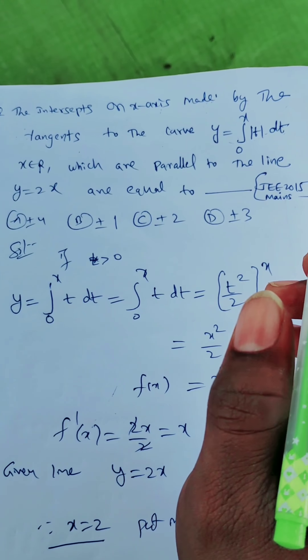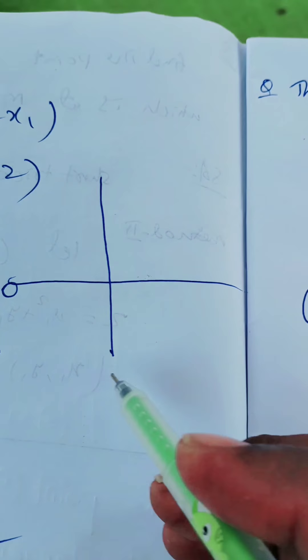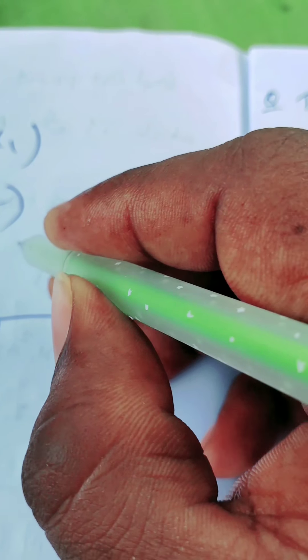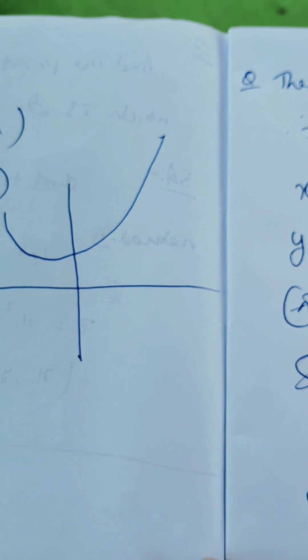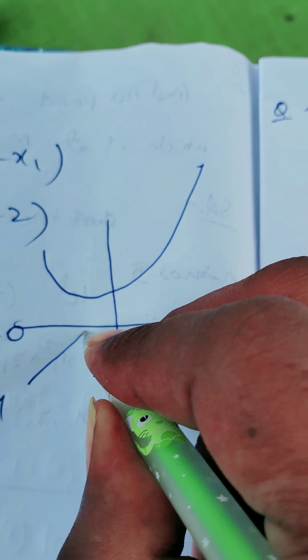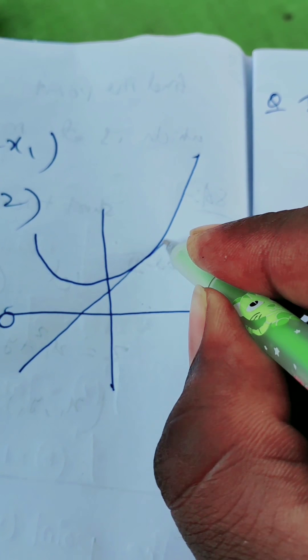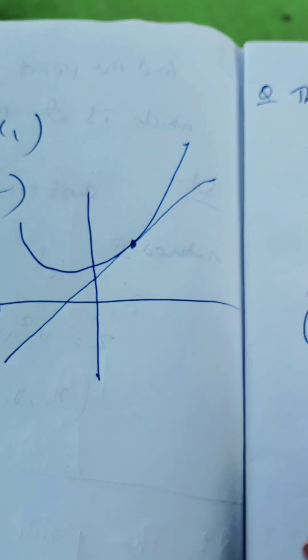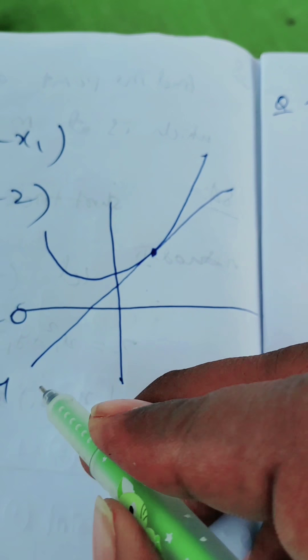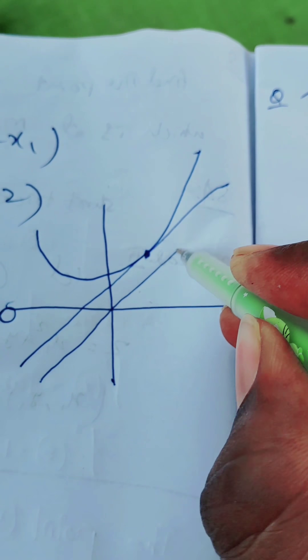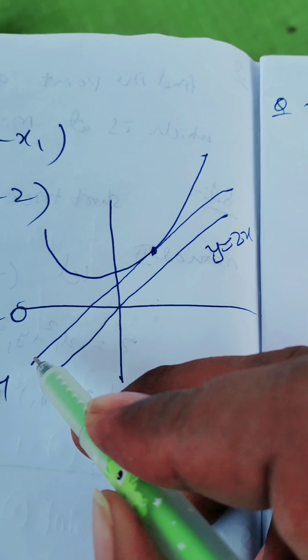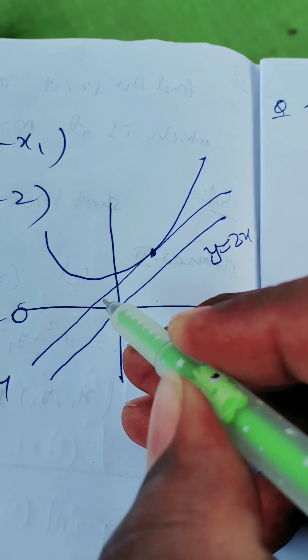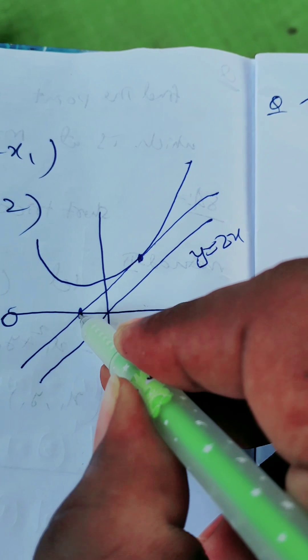Let me address this question. Here we have a function, and for this function there is a tangent. This tangent is parallel to the line y equal to 2x. This is the given curve, and this is the tangent which is parallel to y equal to 2x. The question is asking: what is the x-intercept of this tangent?